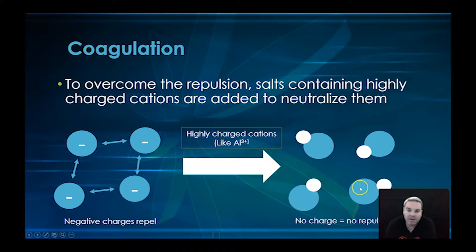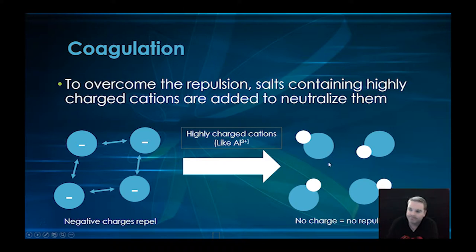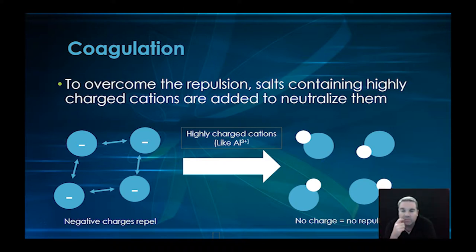What happens is that these particles, because there's no repulsion, start to attract each other and form one big clump. That clump becomes heavier and sinks to the bottom, and we can filter it out. Alum — which is aluminium sulfate — is normally what we use to provide the aluminium.